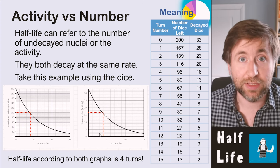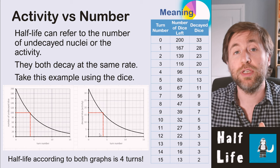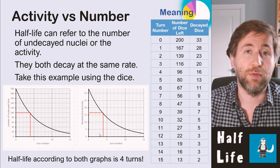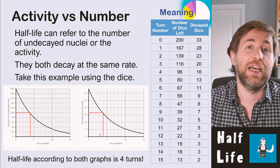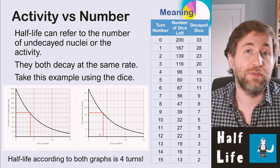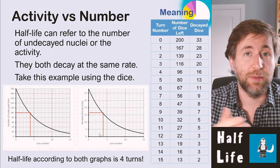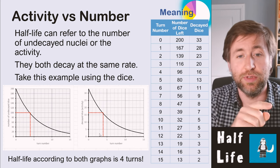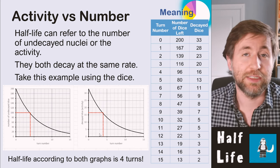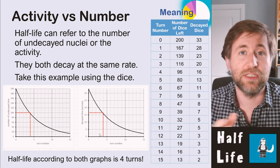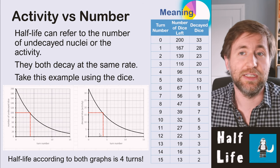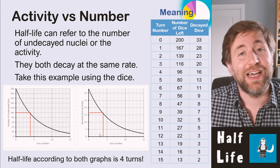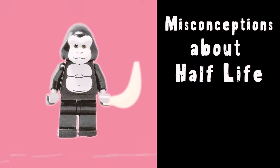Whatever type of graph they give you, all you need to remember is to halve the y-axis value and read off the time using interpolation. Interpolation means moving from one axis to another — it literally means 'between the poles,' or between the axes of the graph.